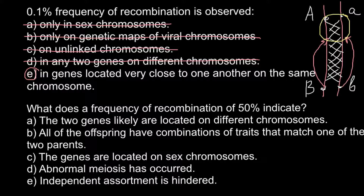What does a frequency of recombination of 50% indicate? Answer A: the two genes are likely located on different chromosomes. This is true, but let's check the other answers as well.